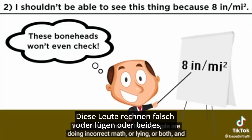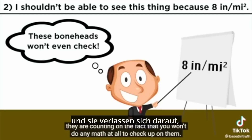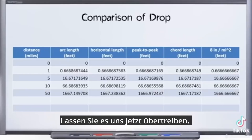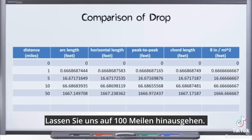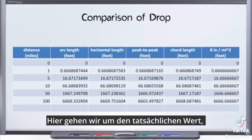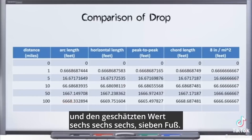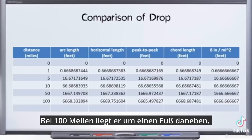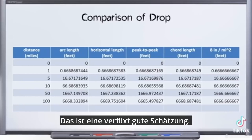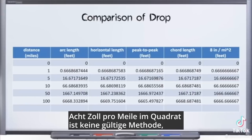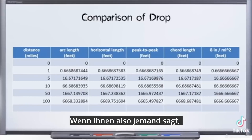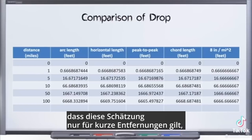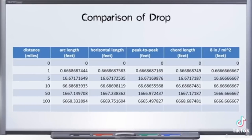Well, I'm sorry friends — those people are doing incorrect math, or lying, or both. And they are counting on the fact that you won't do any math at all to check up on them. Let's push it out to a hundred miles. Surely this approximation is no good at a hundred miles. The actual value is 666.8 feet and the estimated value is 666.7 feet. We are now off by — oh my gosh — it's over a foot! At a hundred miles it's off by a foot. That is a darn good estimate. 'Eight inches per mile squared is not a valid way to measure Earth's curvature.' So yeah, if somebody is telling you that estimate only holds over short distances, that estimate is shockingly good.